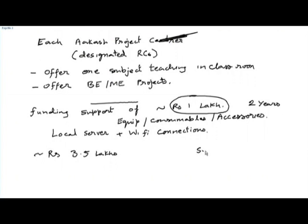This infrastructure includes some funding for a good quality PA system, microphones, a reasonably good handicam, plus a provision for a server and Wi-Fi connections. Server and Wi-Fi connectivity is something required both for workshops and for our Aakash program.